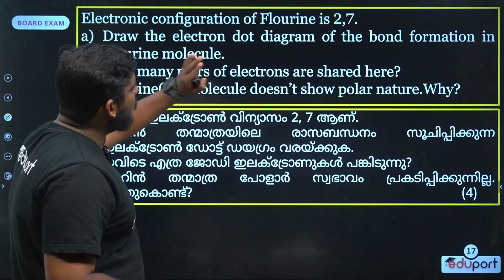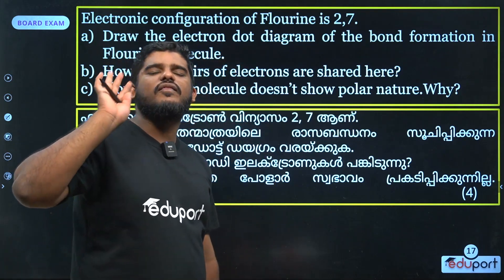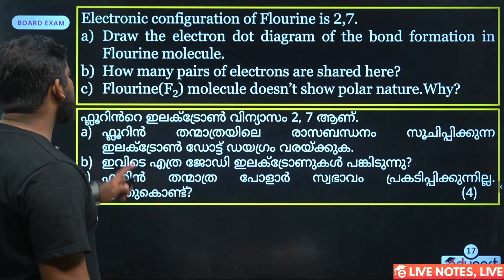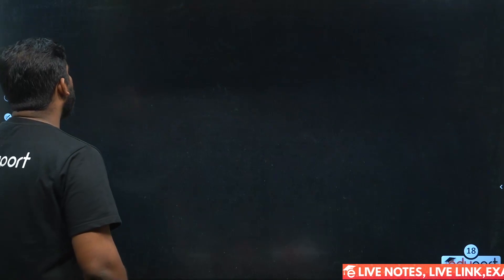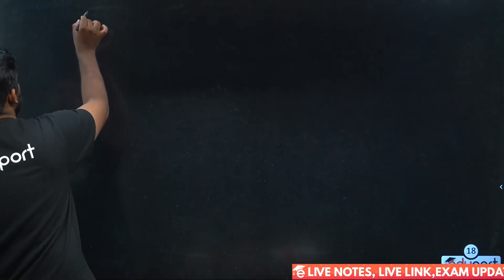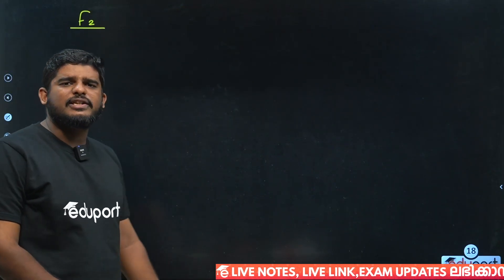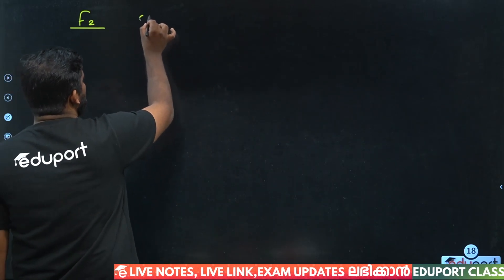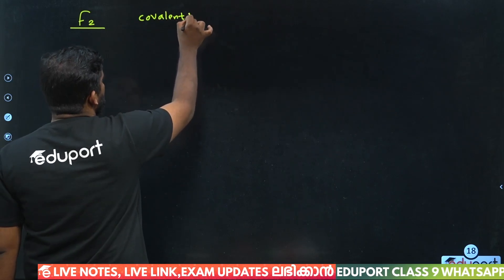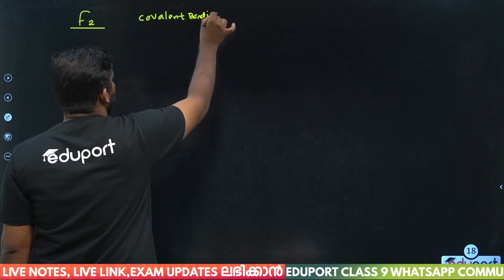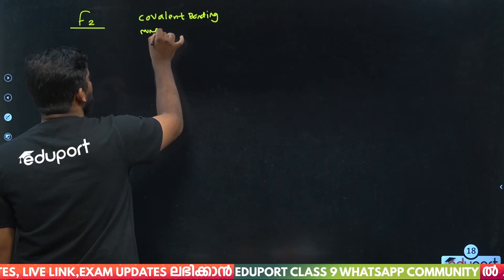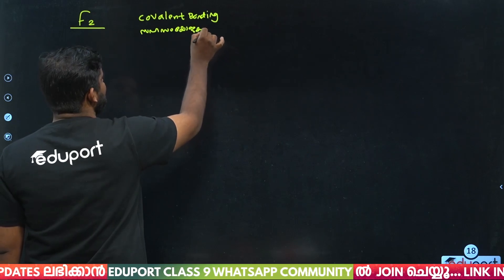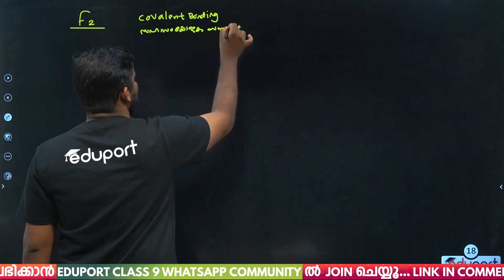The electronic configuration of fluorine is 2, 7. Draw the electron dot diagram of the bond formation of the fluorine molecule. Fluorine molecule is F2. F2 involves covalent bonding. If you learn something like this, you don't need to do fluorine separately — it is covalent bonding.